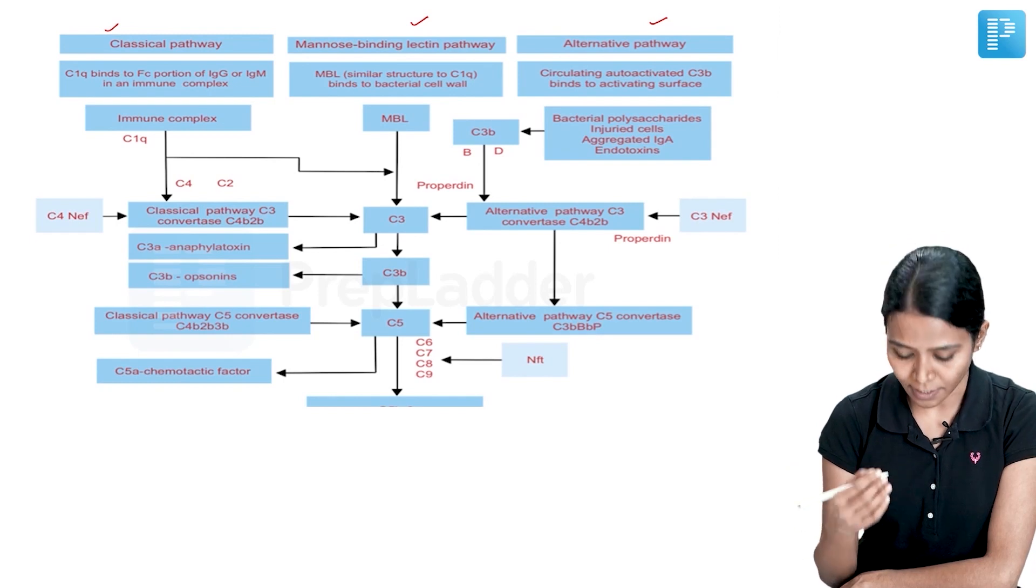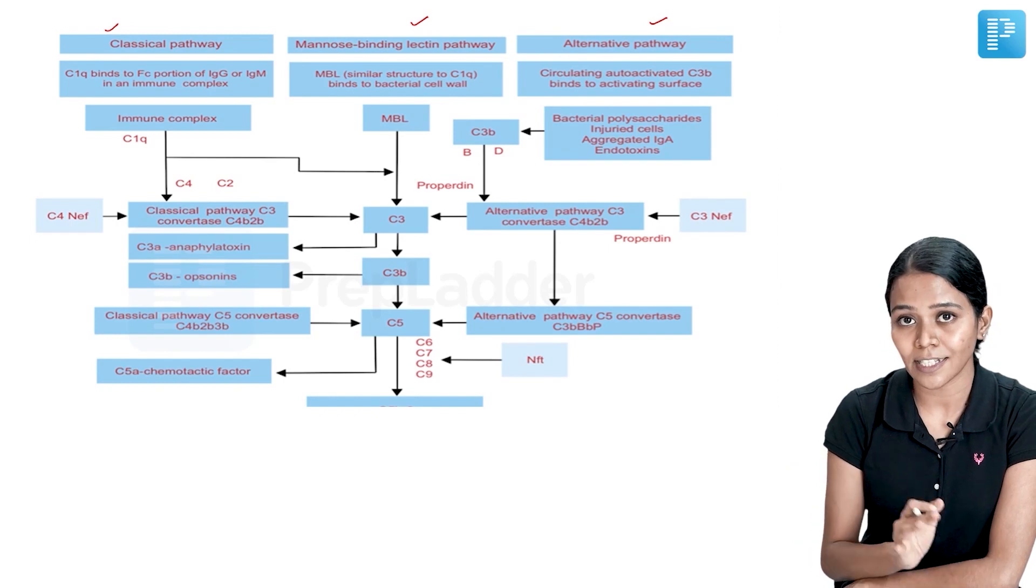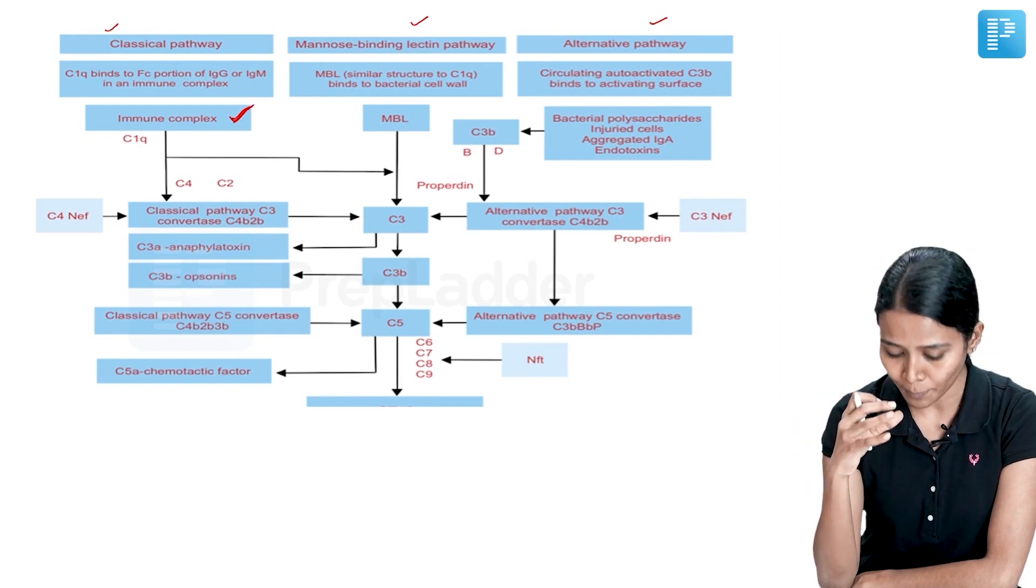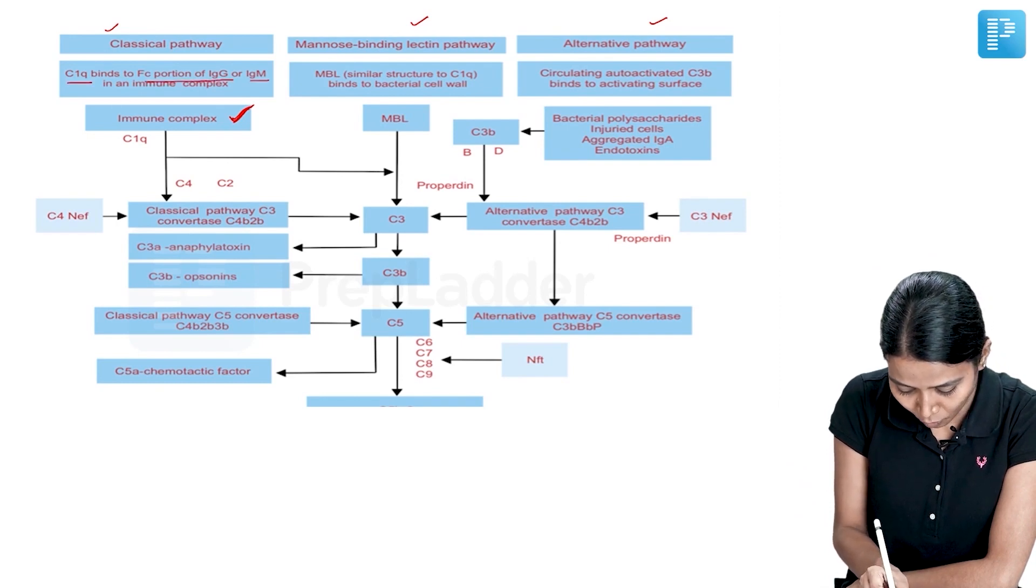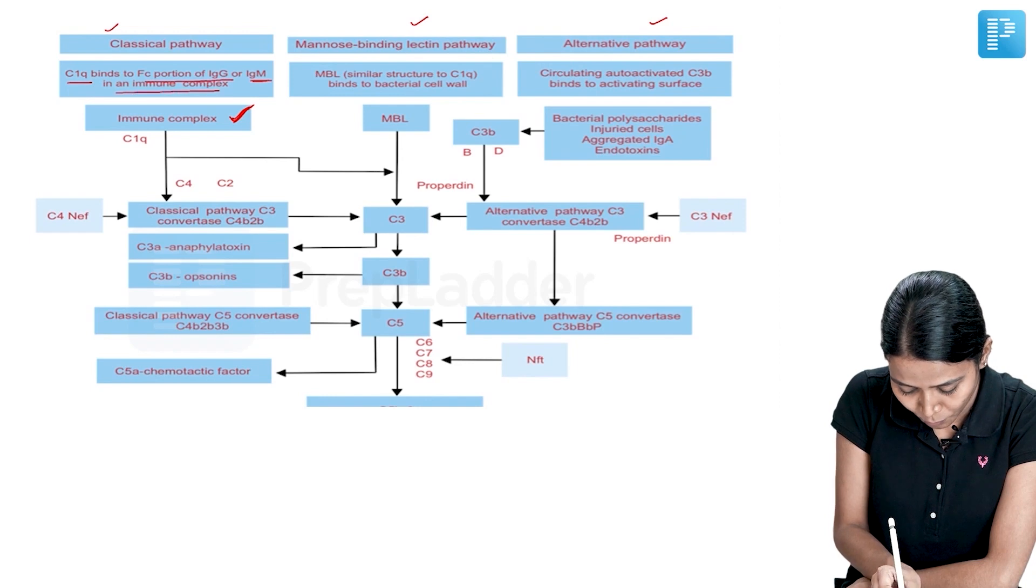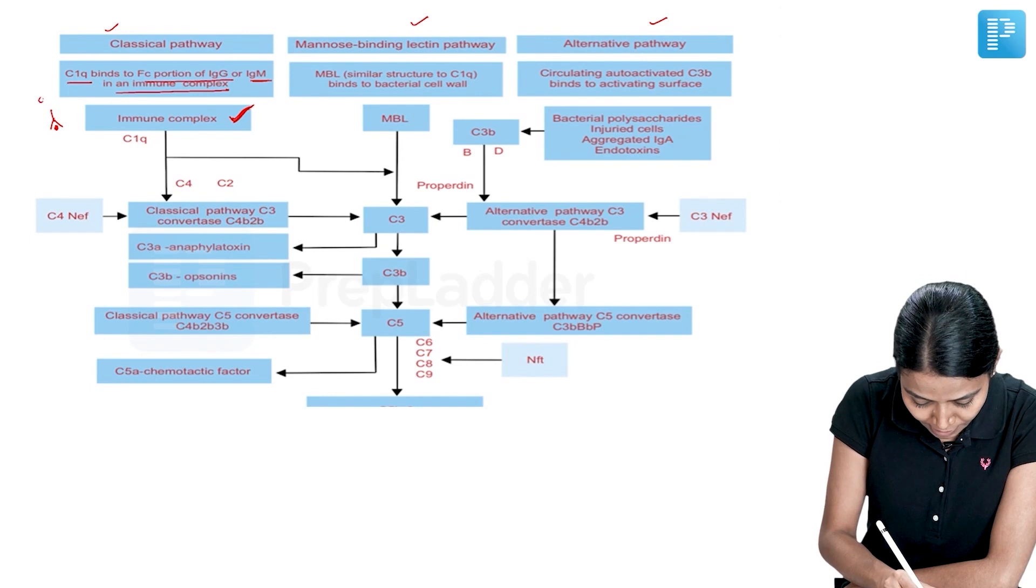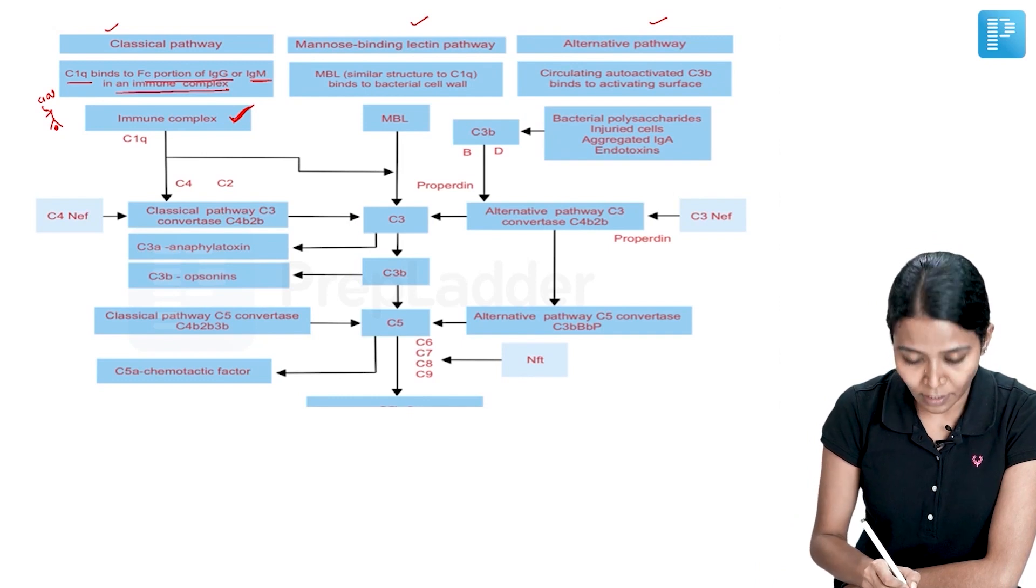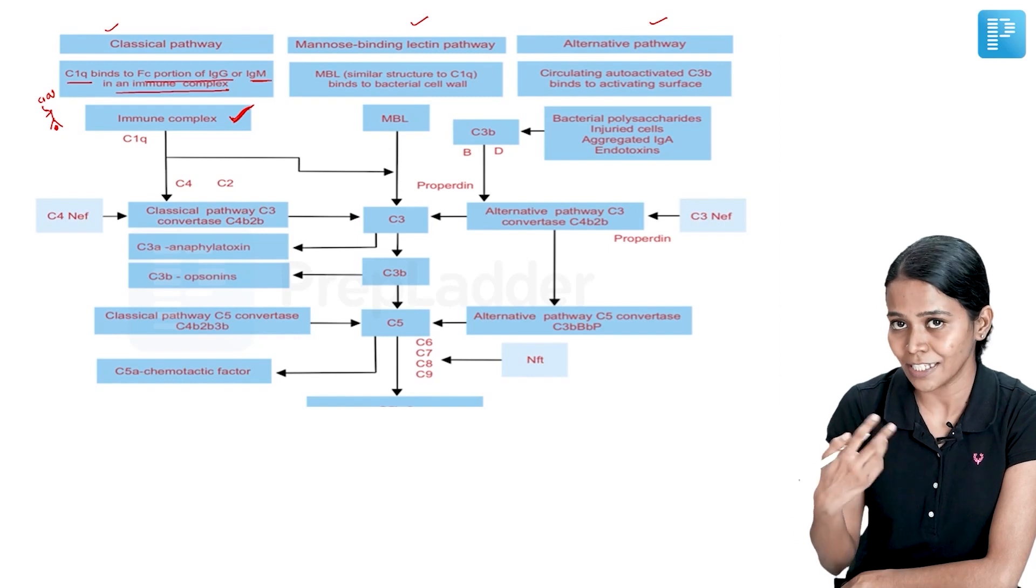Now, what happens in the classical pathway? For a classical pathway to get activated, the first important thing is there should be an immune complex. So once there is an immune complex, that means there is an antigen and an antibody. The C1Q binds to the FC portion of the IgG or IgM in an immune complex. This is an immune complex, antigen and antibody. The C1Q will bind to the FC portion of the antibody. So once this binding happens, the classical pathway is triggered.